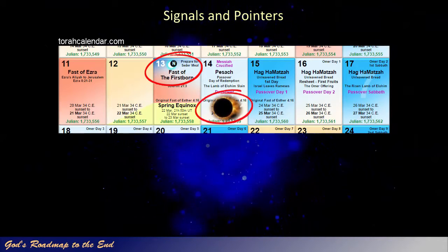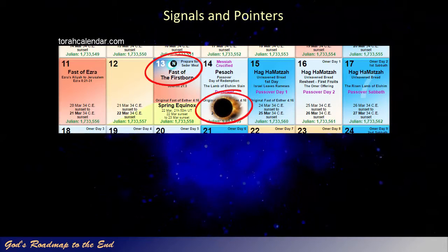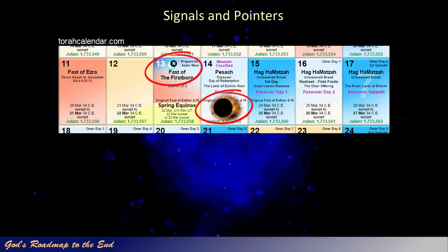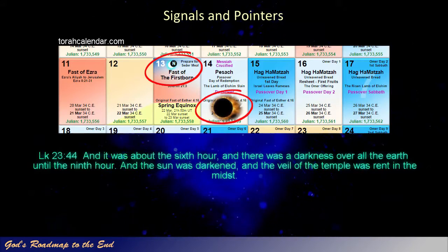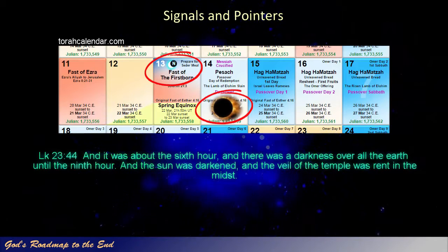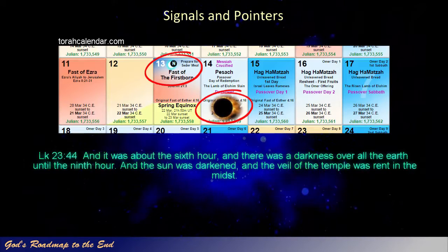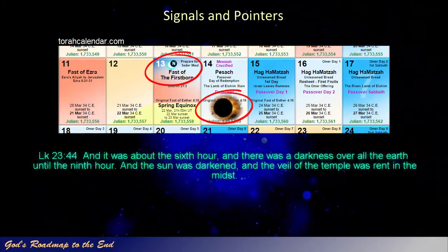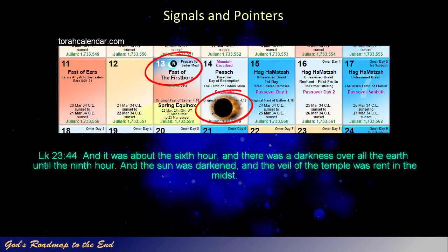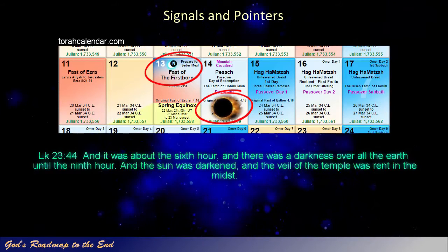This unusual event is recorded in the Gospels, and this is Luke's account of the event. Luke 23 verse 44: And it was about the sixth hour, and there was a darkness over all the earth until the ninth hour. And the sun was darkened, and the veil of the temple was rent in the midst.